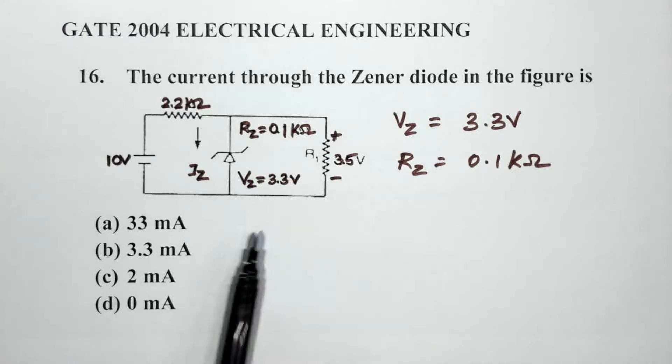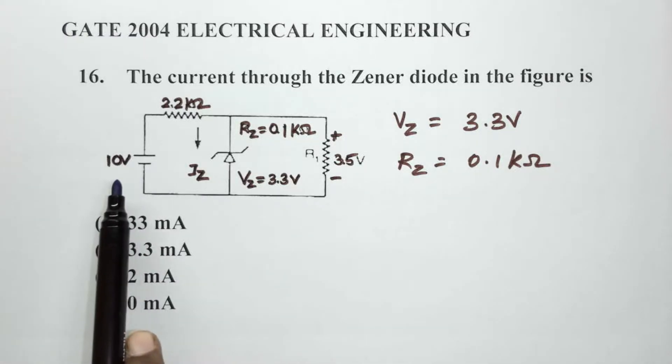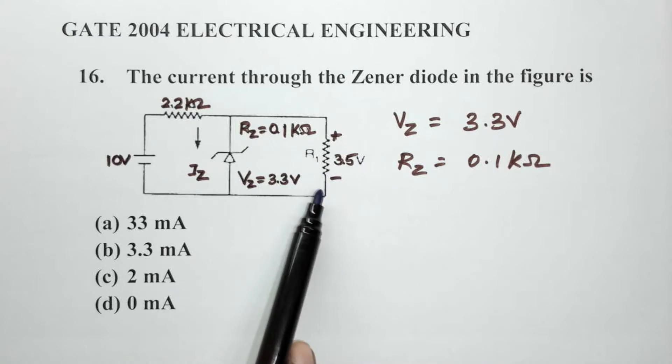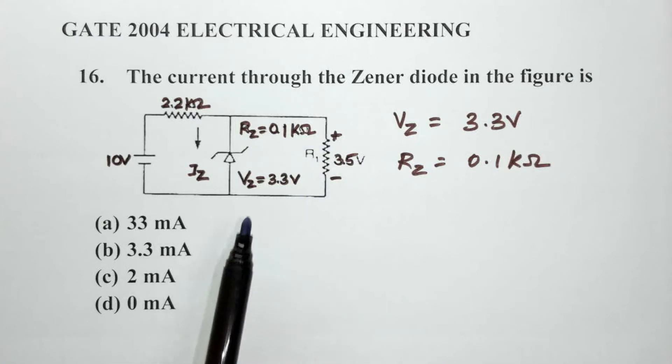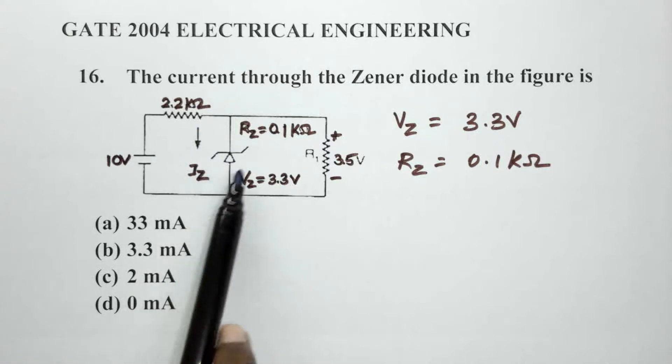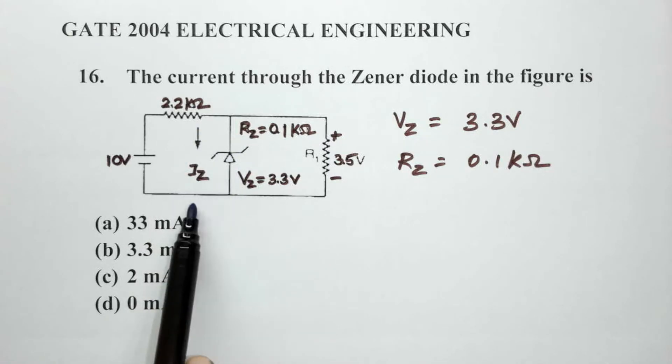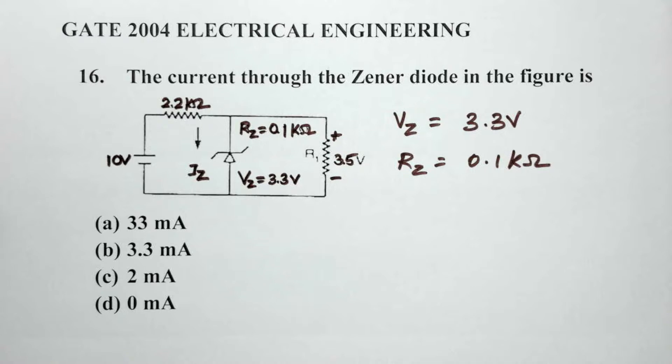On one end we have our source of 10 volts and the voltage across the resistor R1 is 3.5 volts. We will have to find out the current through the Zener diode here given as Iz. So using the basic Ohm's law...